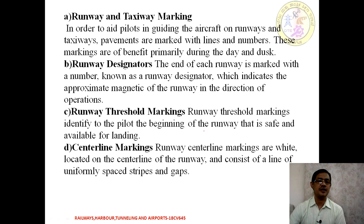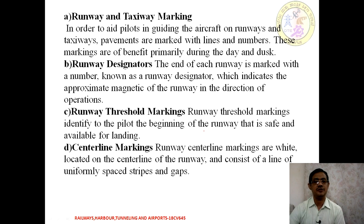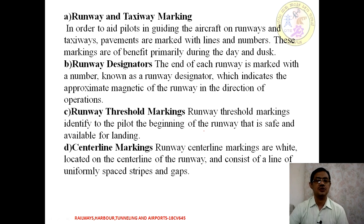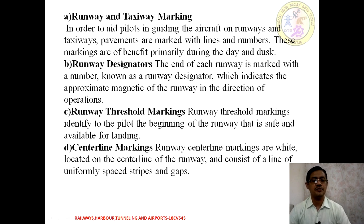We have the runway designator. At the end of each runway, a certain number is marked to indicate the runway designation. This indicates the approximate magnetic azimuth of the runway measured clockwise from north, which is used for ease of landing and takeoff at higher altitude to align the aircraft. Apart from that, there are different types of marking on the runway.